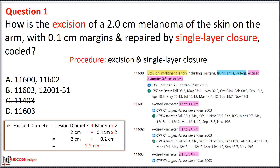After eliminating Options B and C, our next step is to find the correct malignant code based on location and excised diameter. The lesion diameter of 2.0 cm is provided along with a margin of 0.1 cm, so we calculate: margin × 2 = 0.2 cm, then add to lesion diameter: 2.0 + 0.2 = 2.2 cm excised diameter. The location is the arm. For the arm with excised diameter of 2.2 cm, the correct option is Option D: service code 11603.